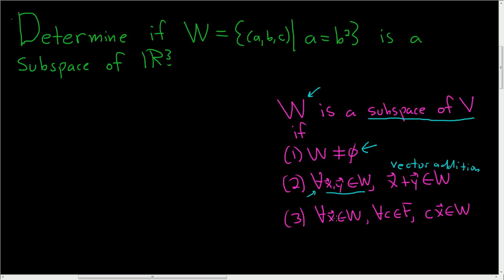The third condition says that for any vector X in W and any scalar in our field—here our field is the real numbers—the vector cX is in W. This is called closure under scalar multiplication. If all three conditions are satisfied, then W is a subspace of V.